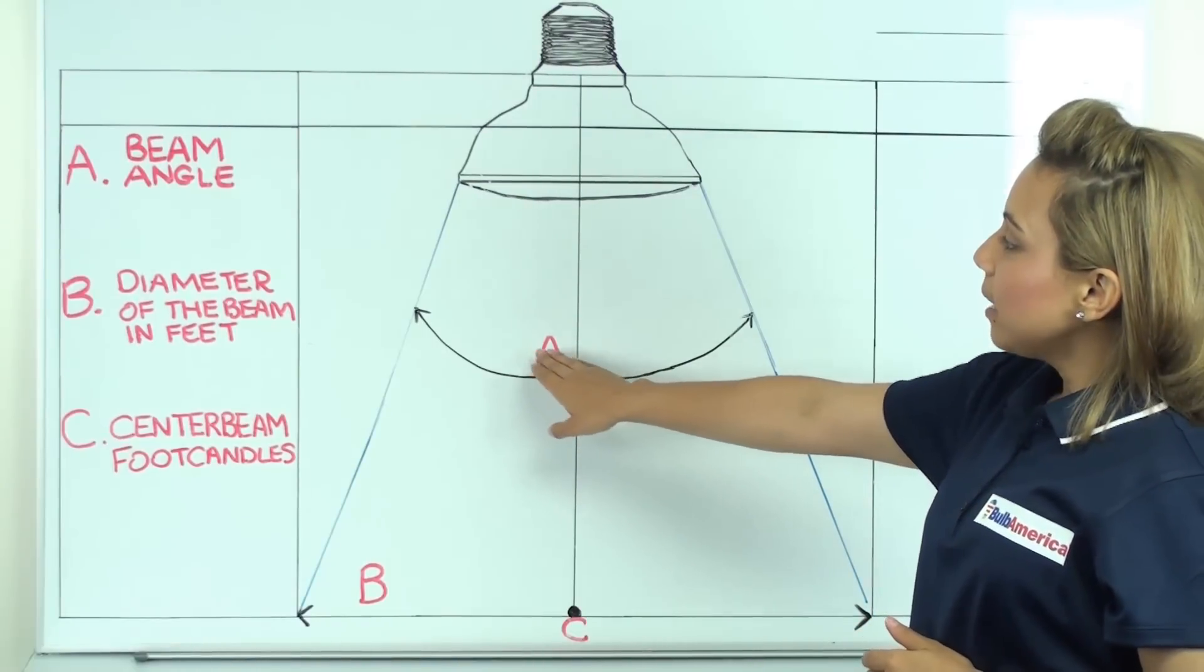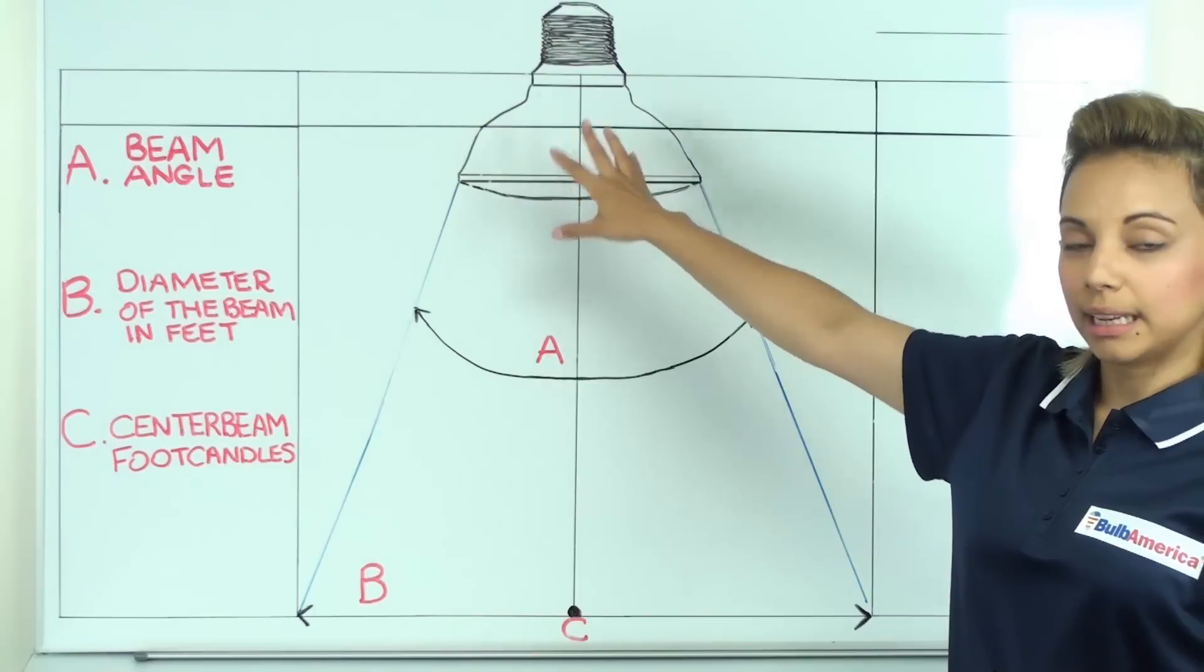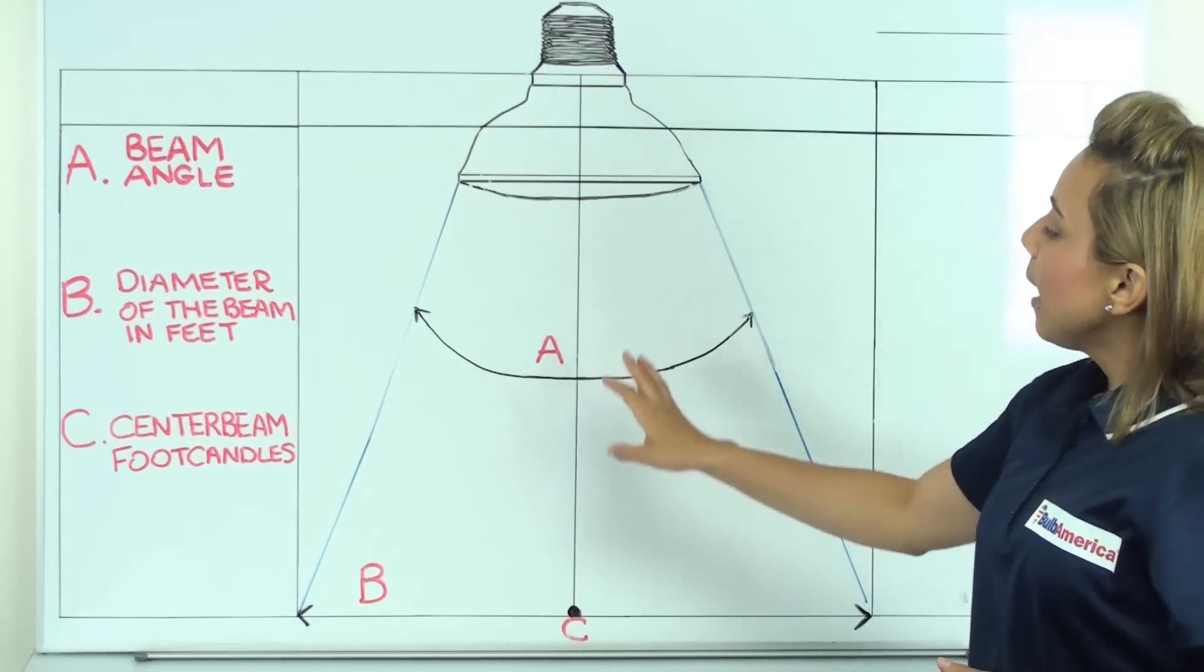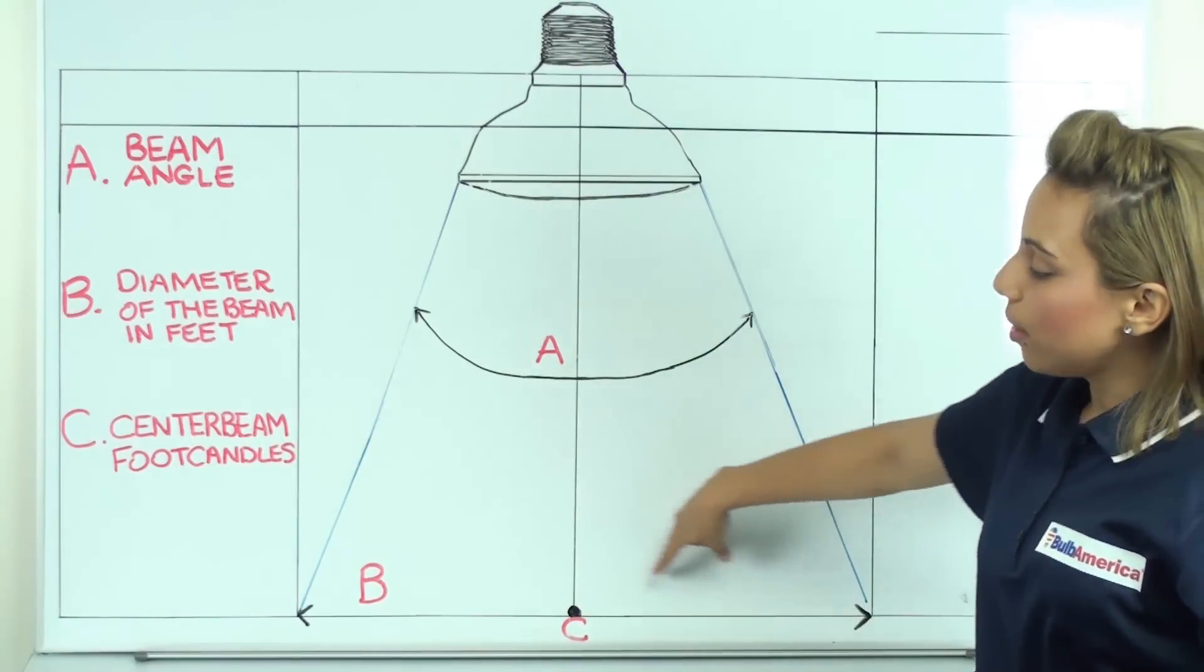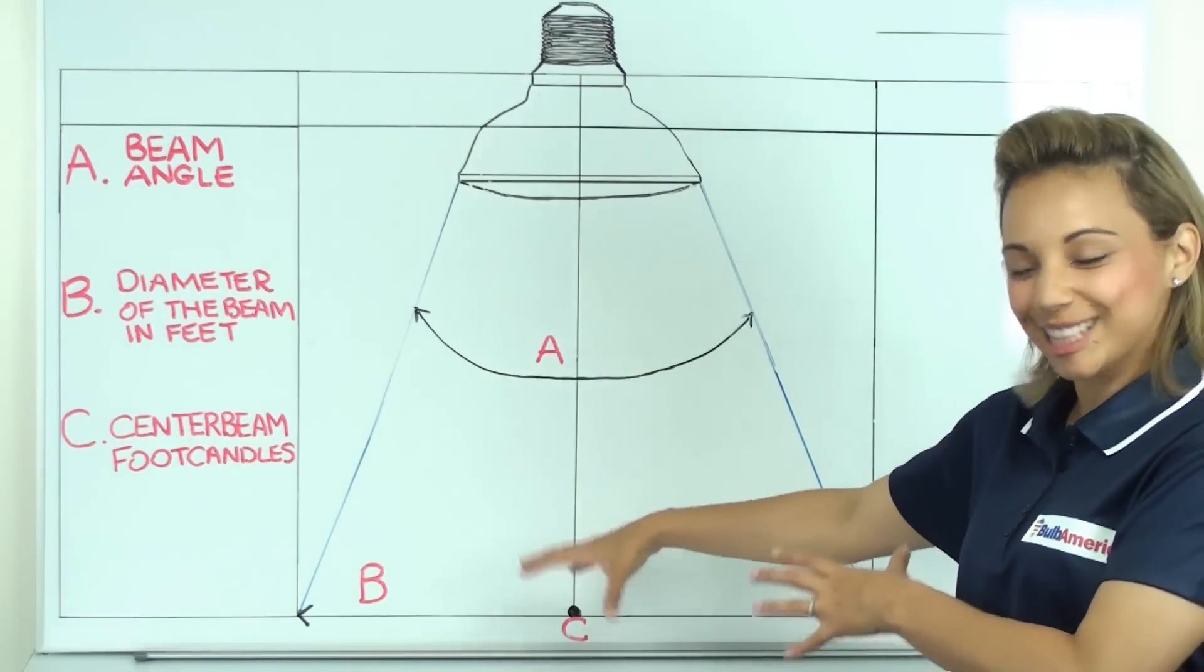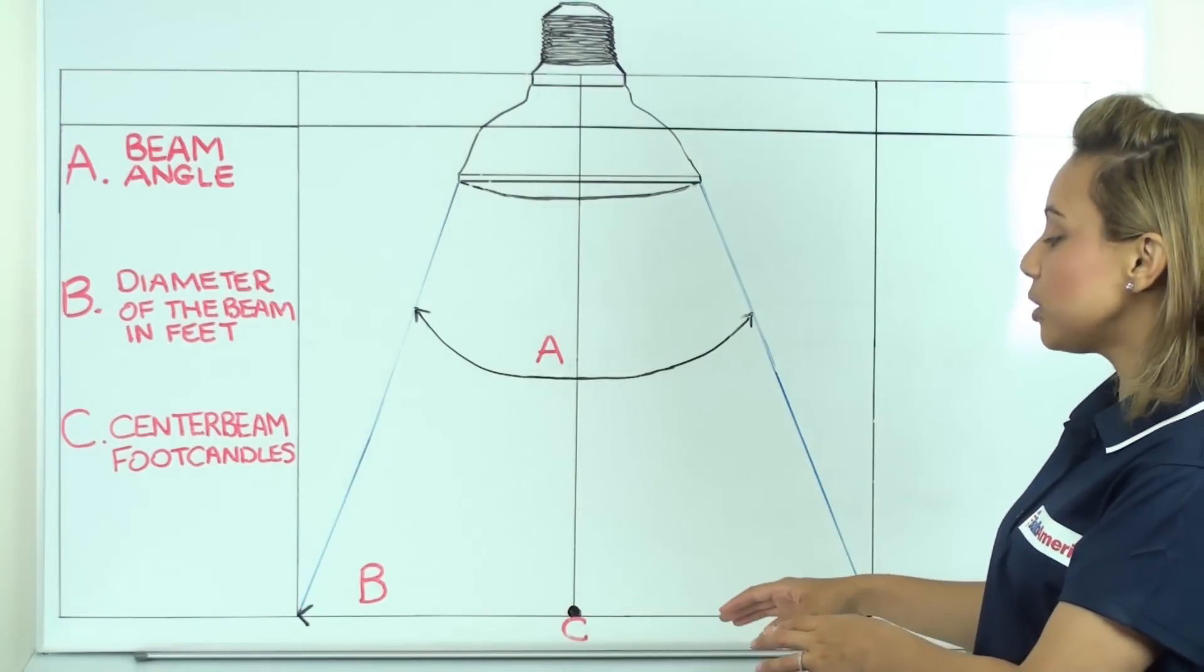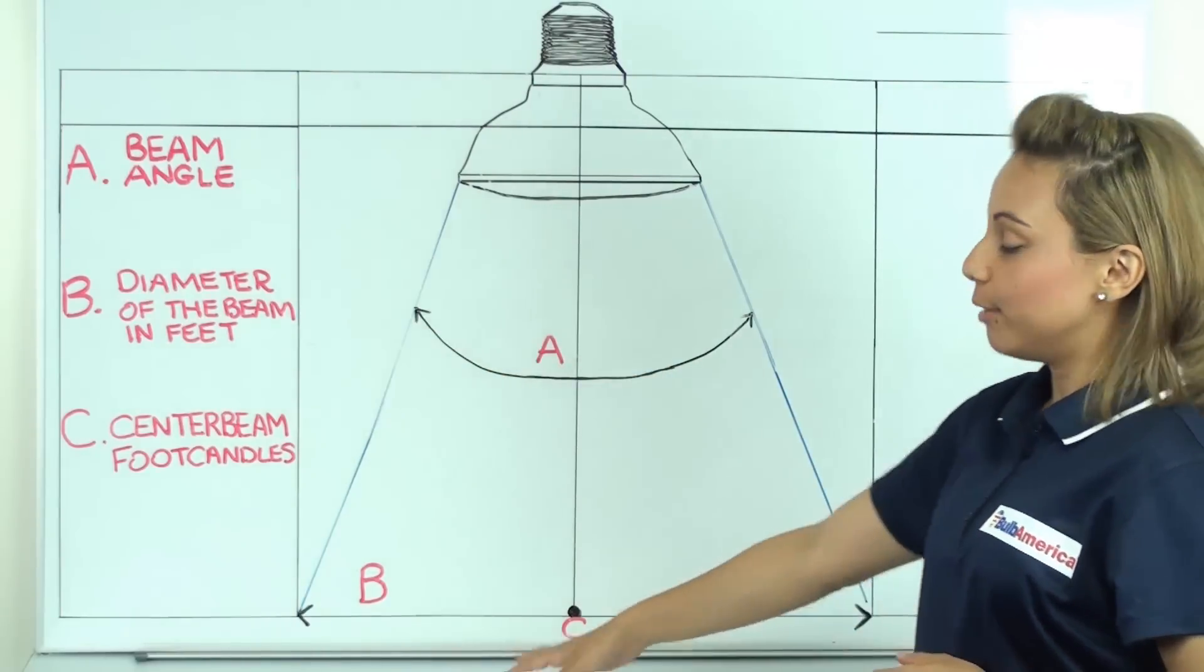Now, point A, you'll see this is actually the angle at which the beam of light leaves the bulb. Then, in B, you'll see this is where the pool of light is going to cover the surface that you're lighting. So this will actually give you the diameter of the beam in feet.